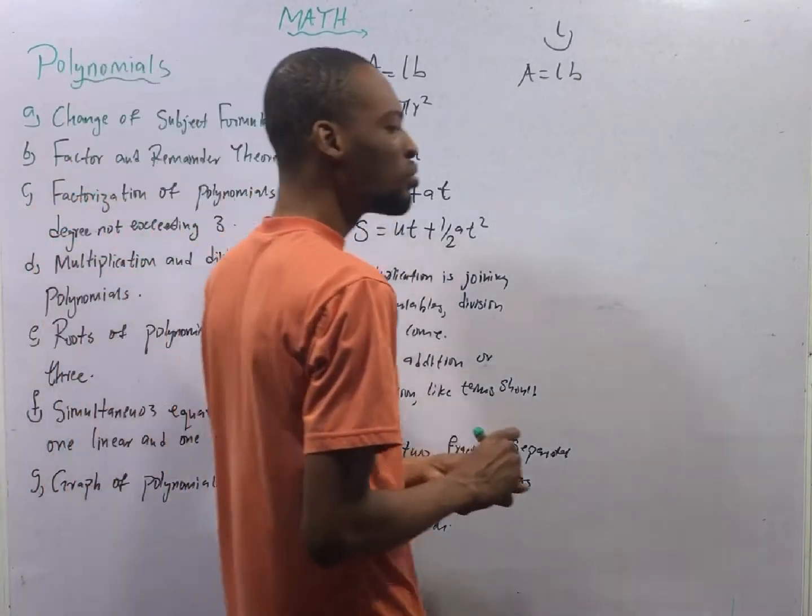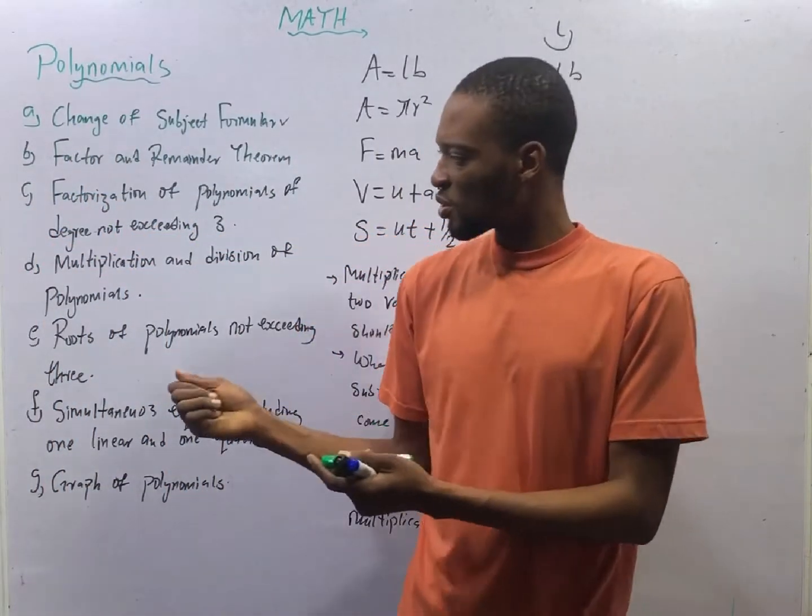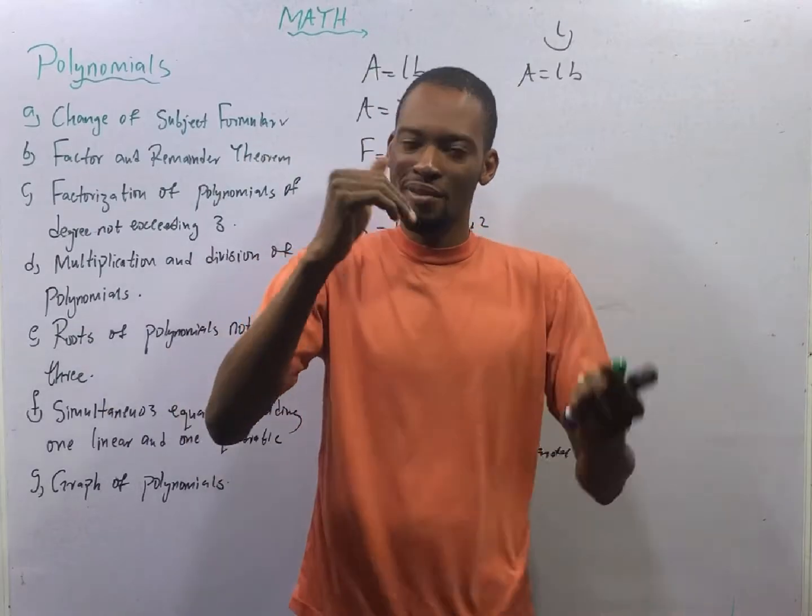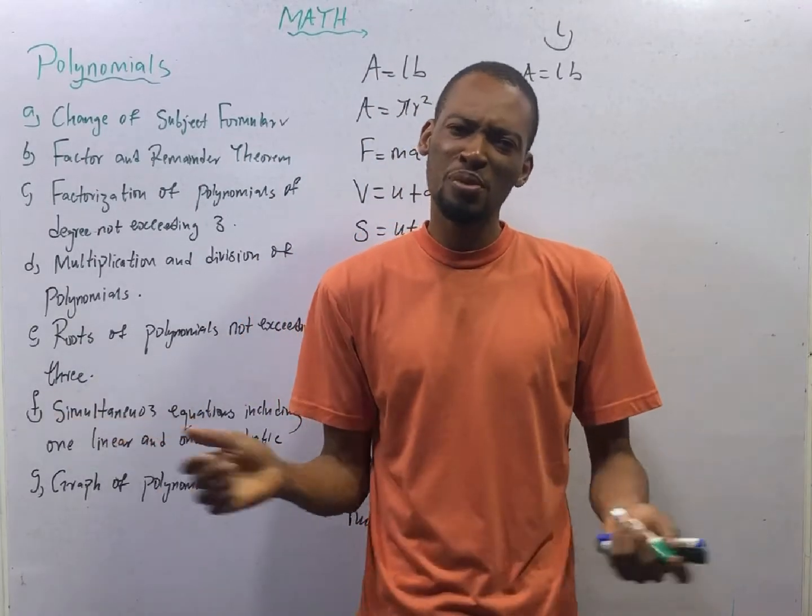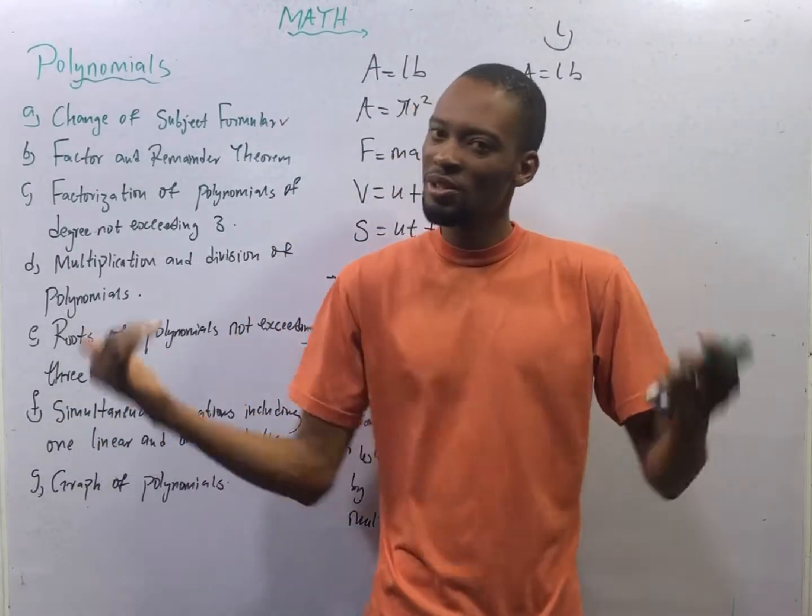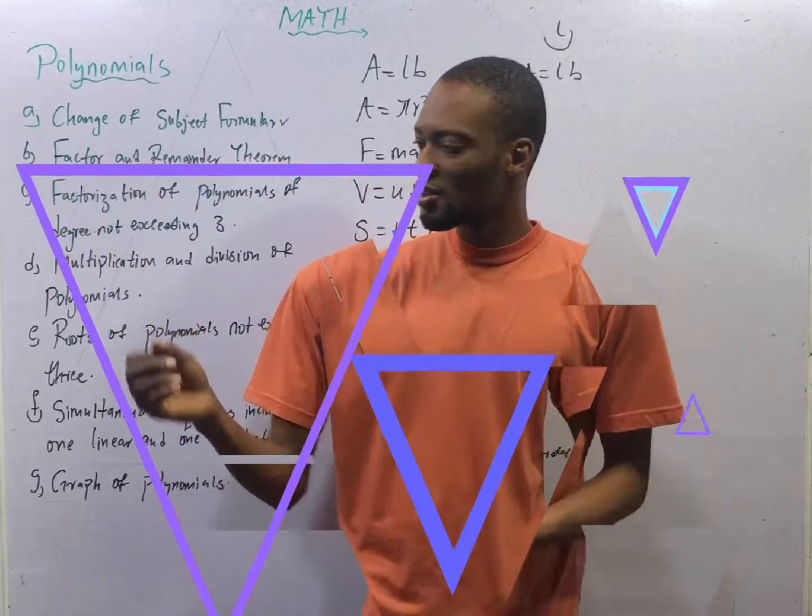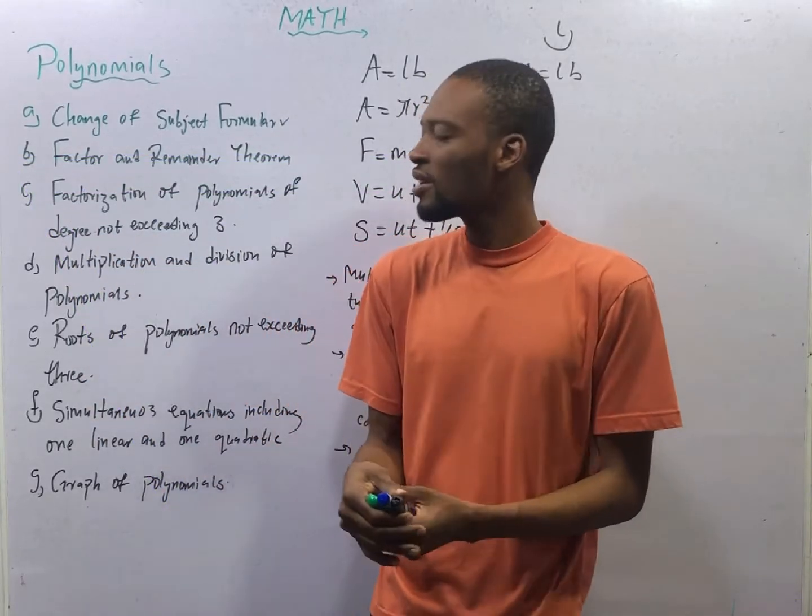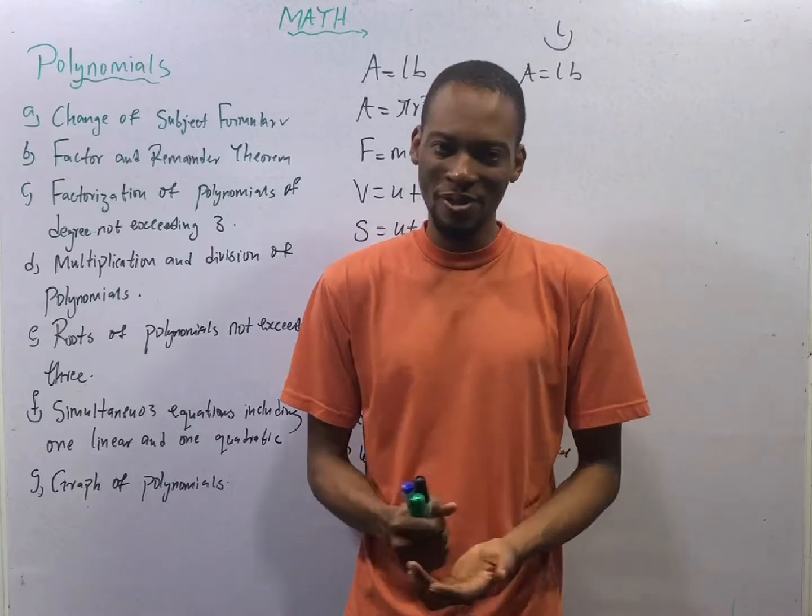To remove square roots, we square both sides. To remove square roots, we square both sides. To remove cube, we find the cube roots of both sides.